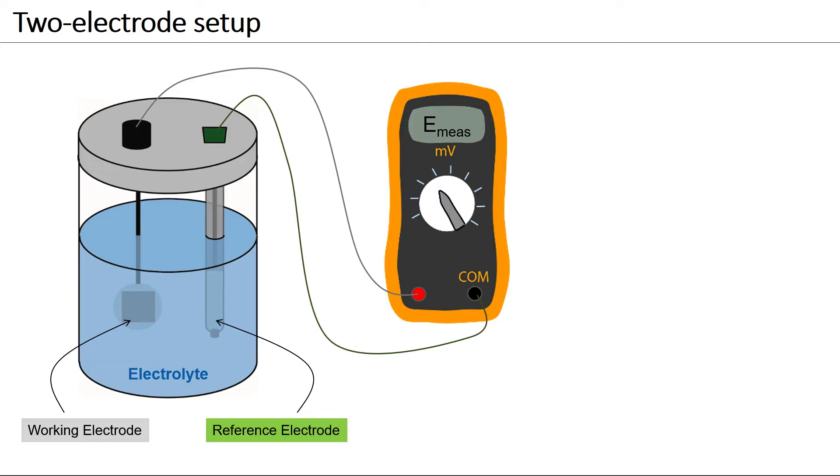A system made of a working electrode and a reference electrode is often referred to as a two-electrode setup or a two-electrode electrochemical cell. Thanks to this setup, one can measure open circuit potentials.